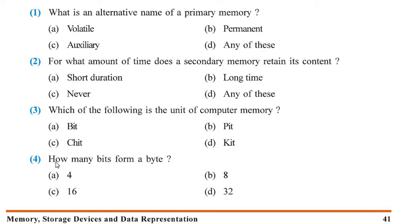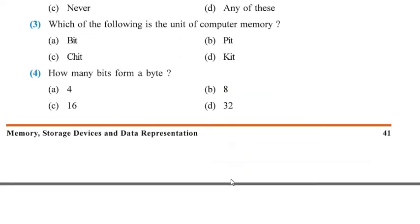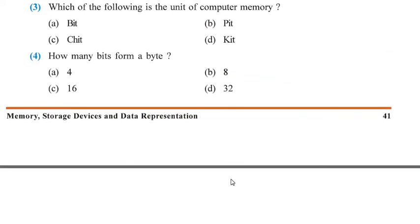Next question: How many bits form 1 byte? The answer is 8 bits. Each bit could be either 0 or 1, and a total of 8 bits form 1 byte.